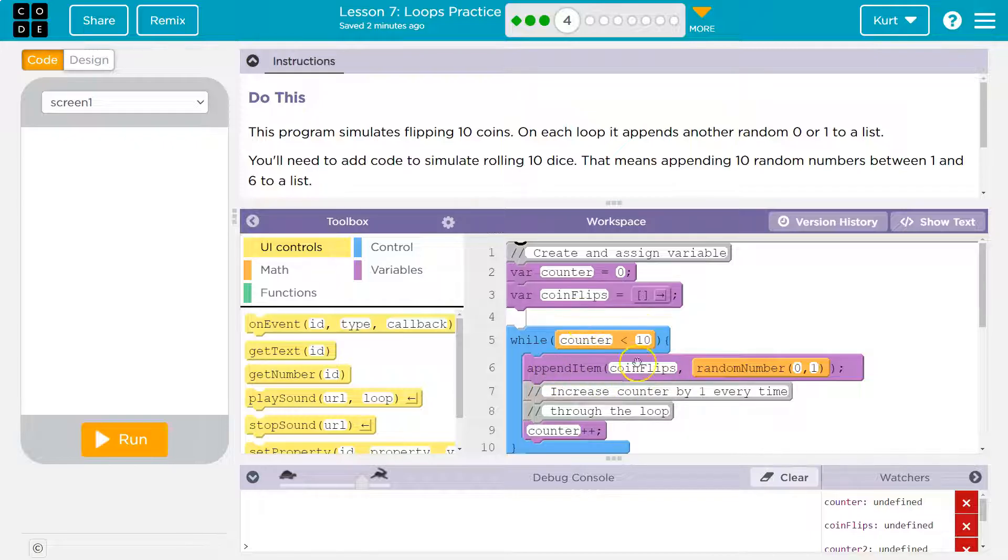Append coin flip. So append to our list coin flip, add to this list a random number, either zero or one. Okay, so the computer picks a random number, zero or one, and adds it to coin list. Coin list gets that number.